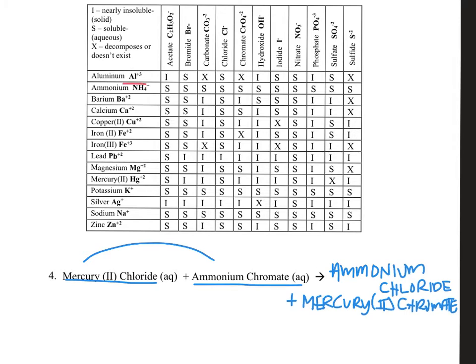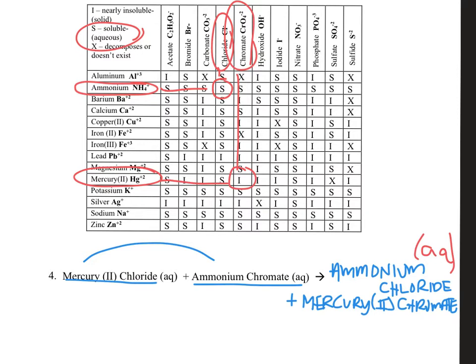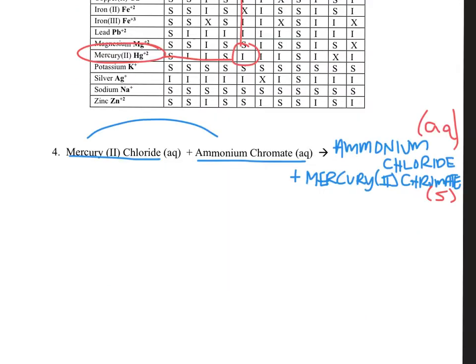We have to check and see if either of them will become solid to know if there's actually a reaction. Let's look at ammonium chloride — ammonium and chloride end up making an S, which means it's soluble and aqueous. Now let's look at mercury two chromate. Here's mercury two, here's chromate. Bringing those together gives an I. I stands for insoluble, which means solid. So yes, we are going to have a reaction here because mercury two chromate is going to be our actual compound that forms as a product.